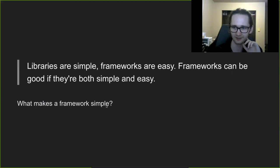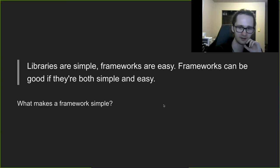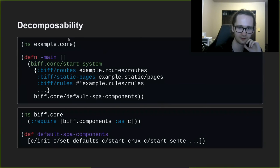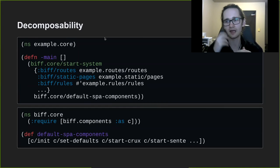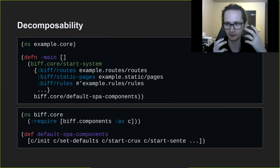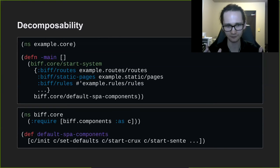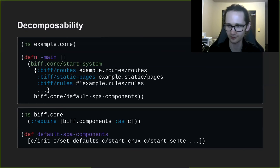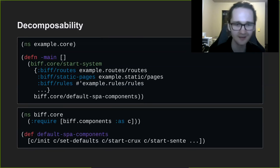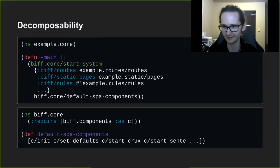I think a big part of the answer is decomposability. When you're making a framework, you need to think about not just how you're going to put it together, but how you're going to take it apart. Because sooner or later, someone is going to try to do something that you didn't think of. When that happens, either they will be able to take it apart and do what they need to do, or they will have to fork the framework — and if they fork it, that is a failure. So the question is: how do we make sure that Biff is easy to take apart without forking?